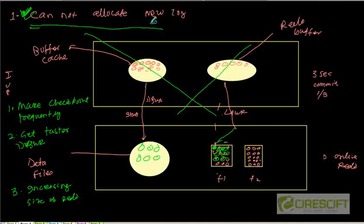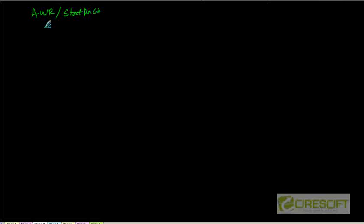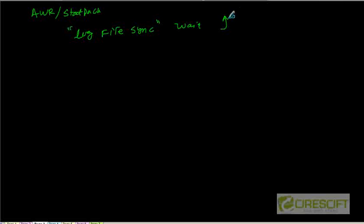So this is the problem and solution for 'cannot allocate new log.' Another kind of problem I have seen is: whenever you run AWR or statspack — which is the statistics I collect to see how my database is running — there is an important metric called 'log file sync.' Whenever you are looking at your AWR report or statspack report, look for this metric called log file sync. If you see this log file sync wait is a high number, then there is something else going on — you are probably experiencing log contention.